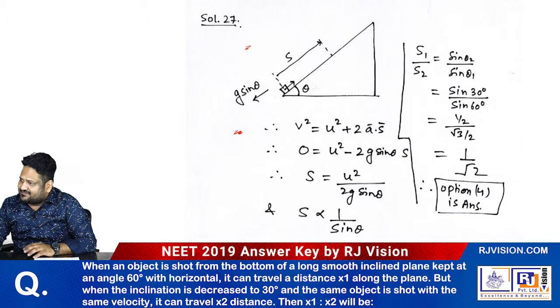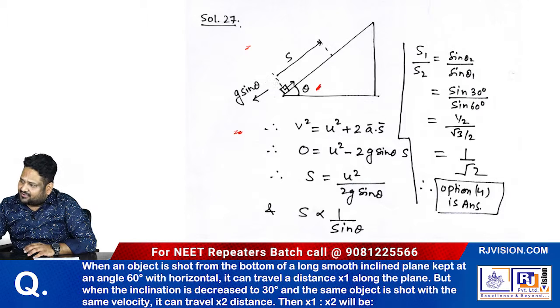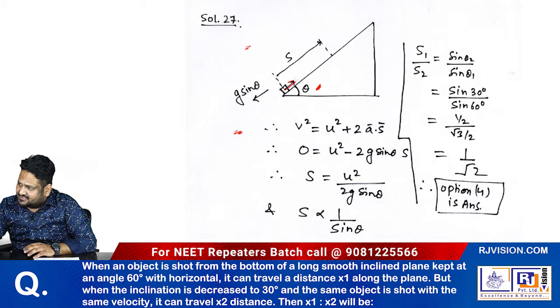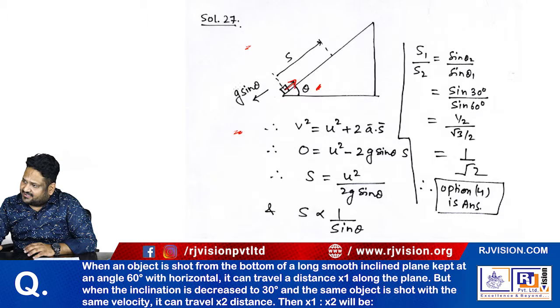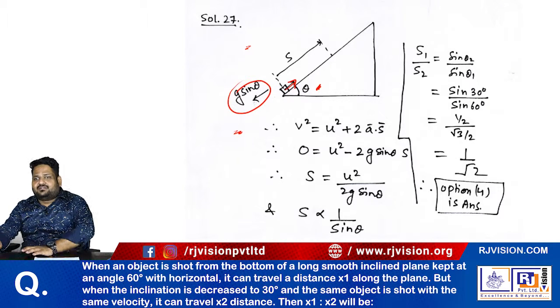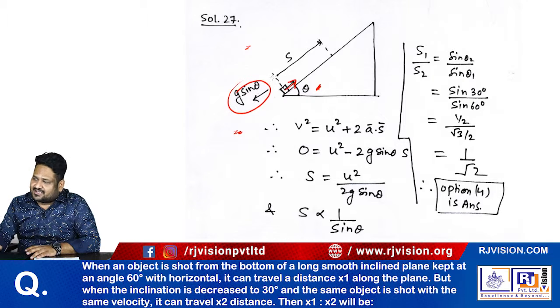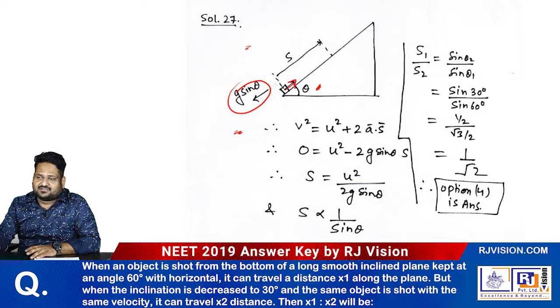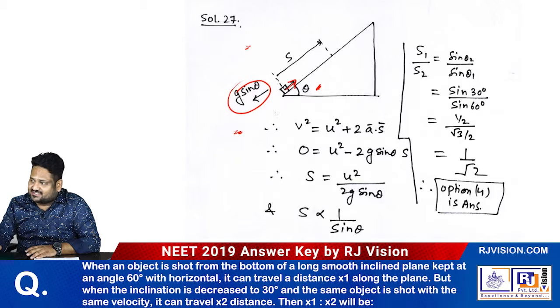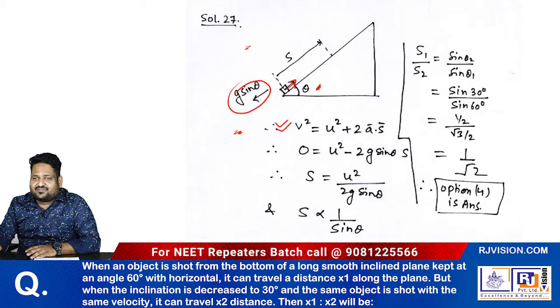Now look at the diagram. This is your inclined plane which makes an angle theta. Because the particle is moving upward, the acceleration in the back direction, or you can see that it is retardation, is in the opposite direction to the velocity. The retardation is g sin theta.